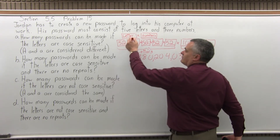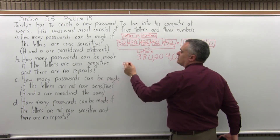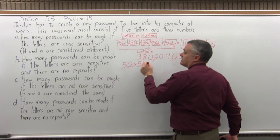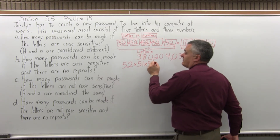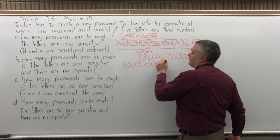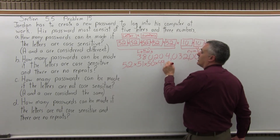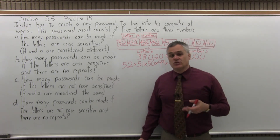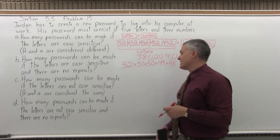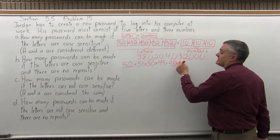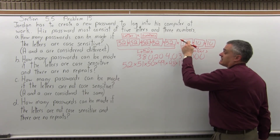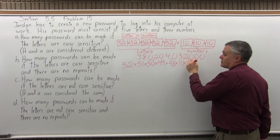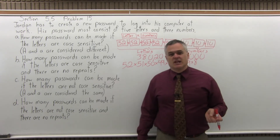For your five choices for letters, it would start with fifty-two choices. But if there are no repeats, the next position would have fifty-one choices, then fifty, then forty-nine — I've used four letters — then forty-eight. That's how many different choices you'd have for your case sensitive letters. Then for your numbers with no repeats, there are still ten choices for the first number, zero through nine. But if you can't repeat a number, you're down to nine choices for the second, then down to eight choices for the last.